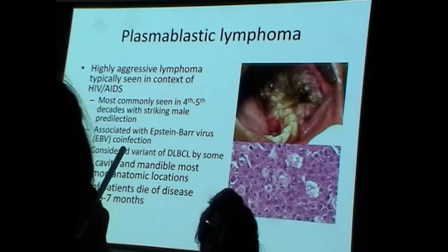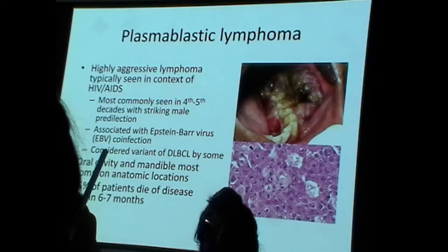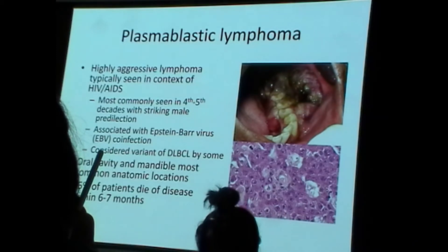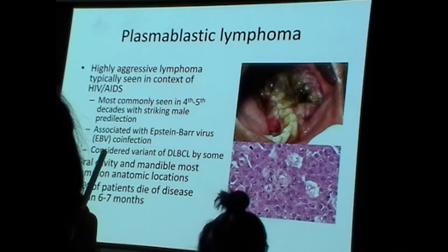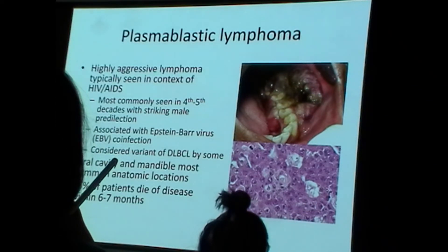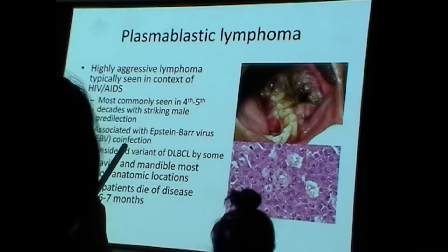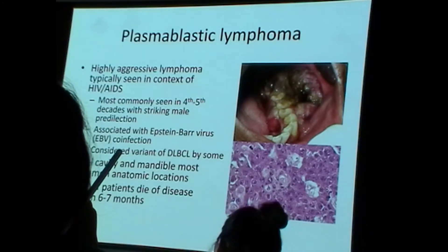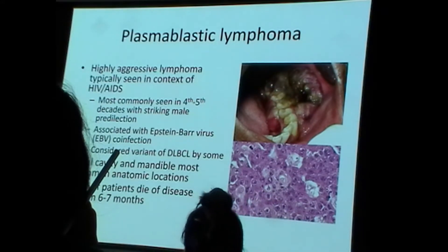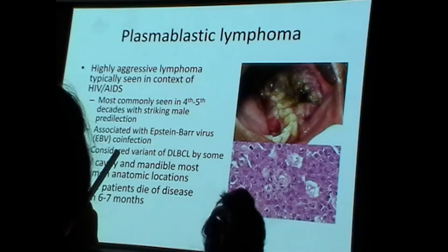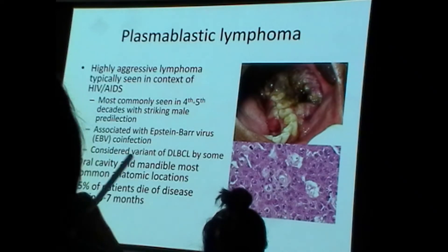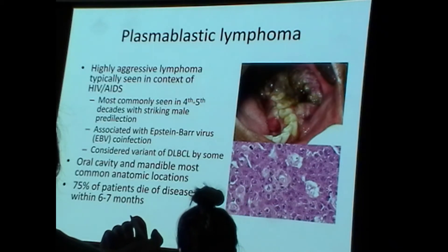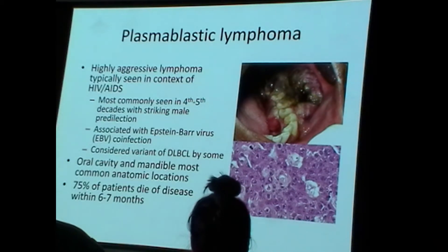Plasmablastic lymphoma is a lymphoma of plasmablasts — precursors to plasma cells. A plasmablastic lymphoma is a white blood cell cancer of cells that genetically and functionally are at the stage of a plasmablast. If you look at these cells microscopically, they look like plasmablasts. Plasmablastic lymphoma is a highly aggressive type of lymphoma.